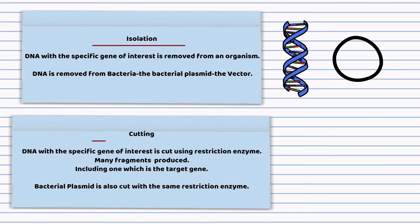Cutting. DNA with the specific gene of interest is cut using a restriction enzyme. Many fragments are produced including the one with the target gene. The bacterial plasmid is also cut using the same restriction enzyme.